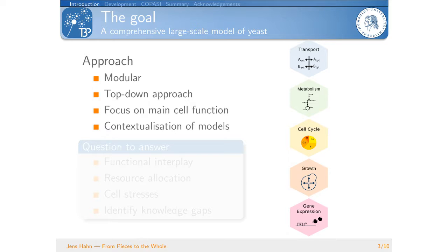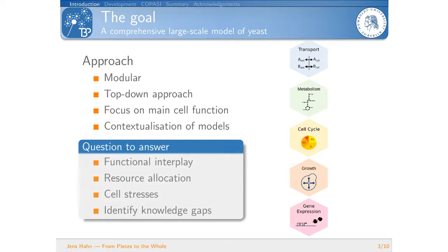The main question we want to answer is first of all the functional interplay of these modules. Then we want to find out how is the resource allocation done in the cell. So where do the nutrients go? Where does the energy go during the cell cycle? We of course want to tackle cell stresses. As you notice we don't have a signaling module yet. That means that this is just a basic test of cell stresses. And last but not least we want to identify knowledge gaps. That is done in the process of producing the model as well as when the model is running, then we want to check different hypotheses and check where are knowledge gaps in the literature or in our knowledge about these cells.